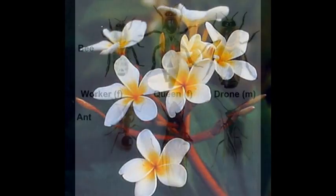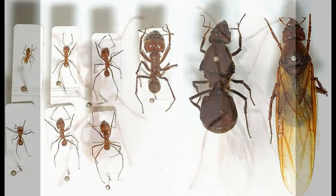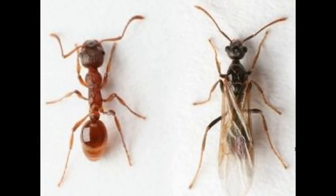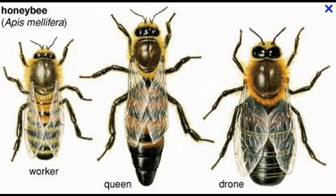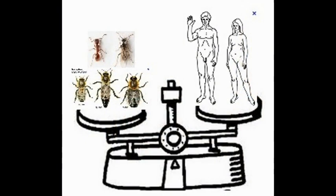More than 20,000 species of both ants and bees exist and they are found in every part of the world except the Antarctic. Their total biomass is approximately equal to the total biomass of the entire human race, or about 20% of the terrestrial animal biomass.